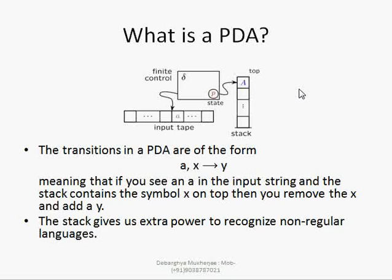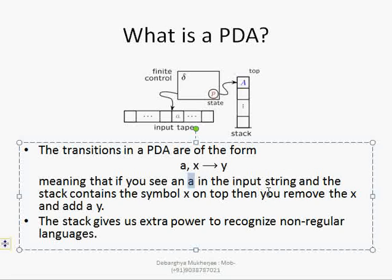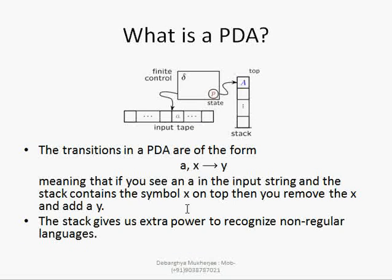In a PDA the transition can be defined as: a comma x arrow y, meaning that if you see symbol a in the input string and the stack contains symbol x on top, then you remove x and add y. So if we have a in our input tape and x on the top of the stack, we replace x with y. This rule applies for a particular state, and the stack gives us extra power to recognize non-regular languages.